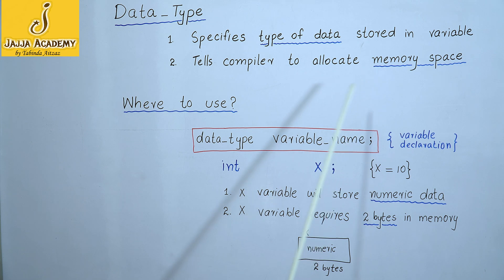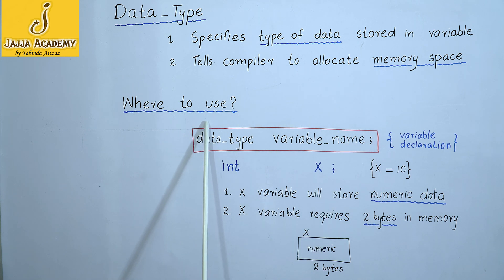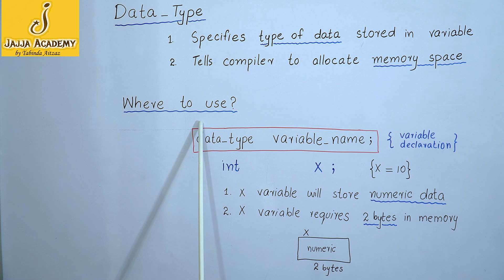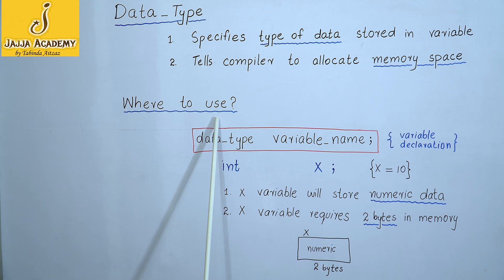The question is, where to use a data type? Whenever we declare an identifier — an identifier may be a constant, a function's name, or a variable — we have to provide the data type of that identifier.